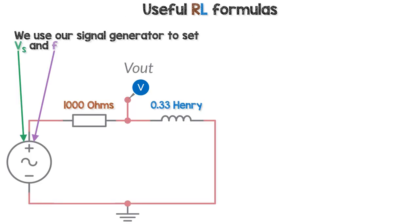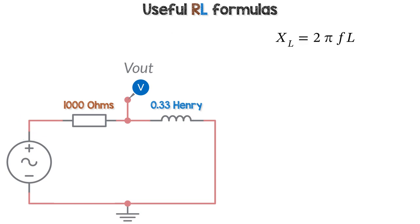We use our signal generator to set the supply voltage and frequency. Vs is kept at a constant amplitude for a fair test of the circuit. The inductive reactance in Ohms is the product of 2π, the frequency in Hertz, and the inductor value in Henry.